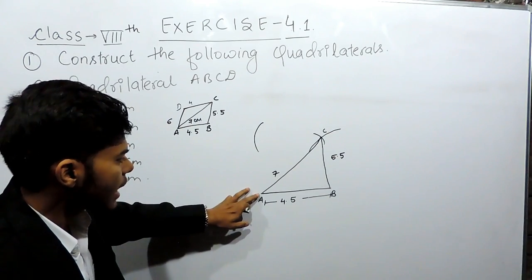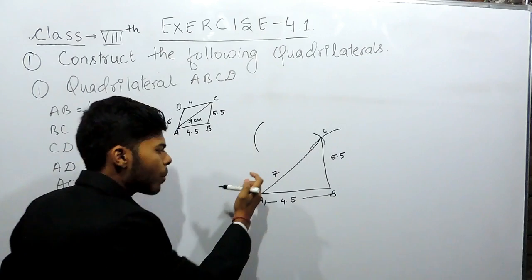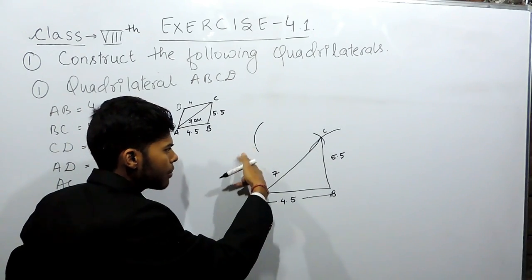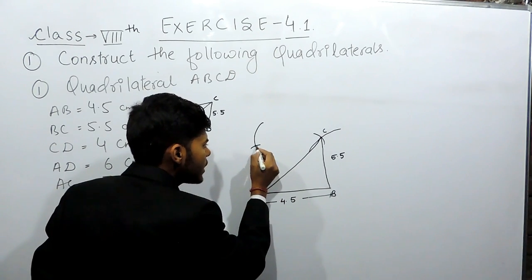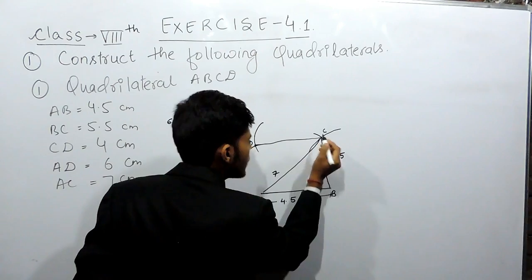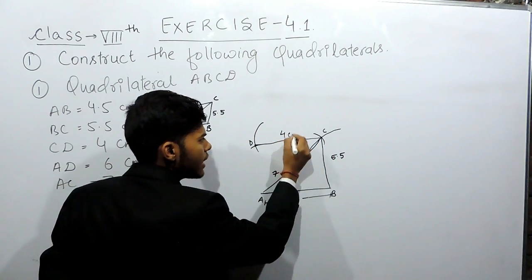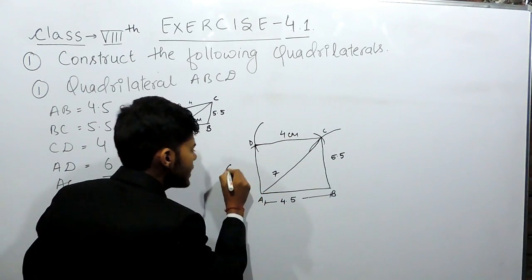After that, keep the compass again at point A because AD is 6 cm. Open it till 6 cm and mark an arc like this. So, this point will be point D. If you join this with point C, this will be 4 cm. And if you join this with point A, this will be 6 cm.